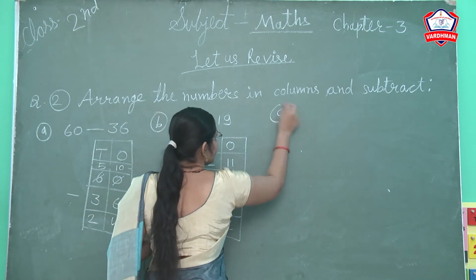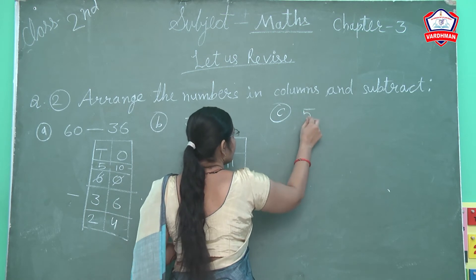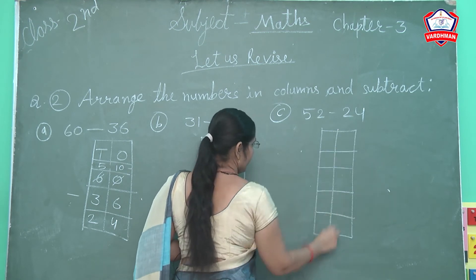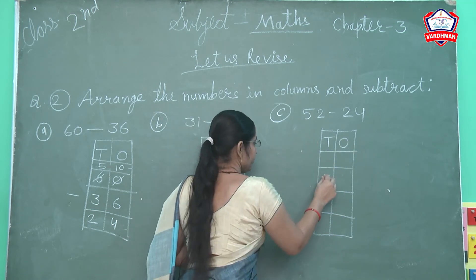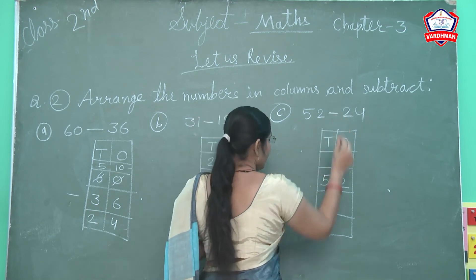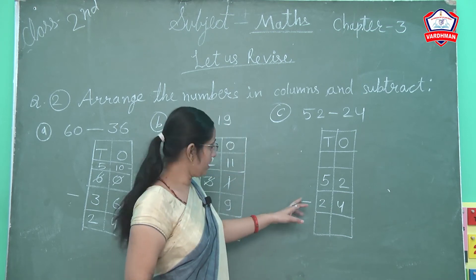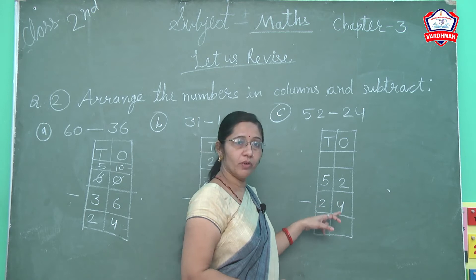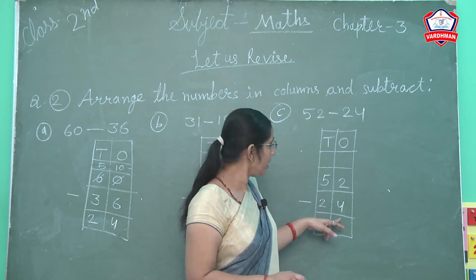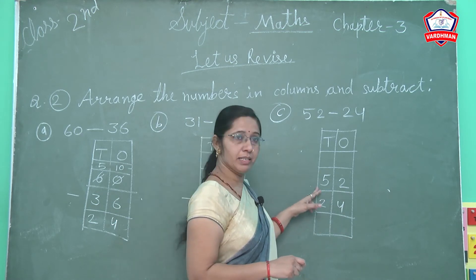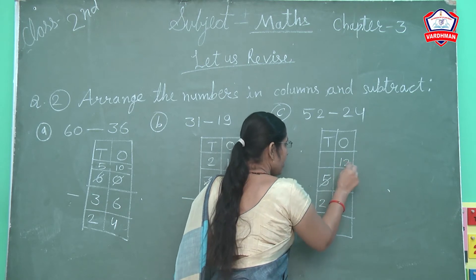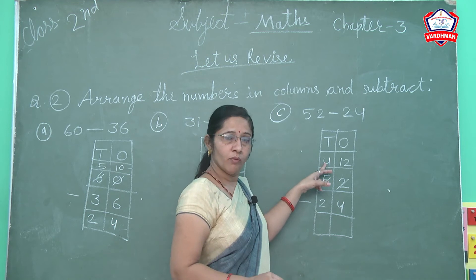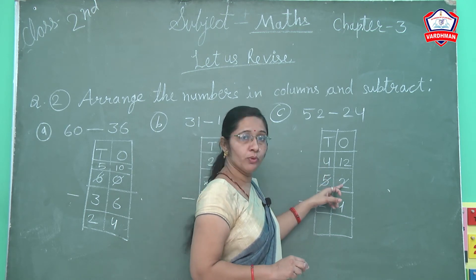Next question number c: 52 minus 24. Arrange in column — tens and ones. First digit is 52, next is minus 24. Write symbol here. Let's start — ones column. Ones mein first digit is 2. 2 mein se 4 less karenge. 2 mein se 4 less hota hai kya? Nahin, kyunki 2 small hai aur 4 biggest hai. Jo small number se biggest number cut nahi hoga. Pass wale se borrow lenge. 5 se idhar 1 borrow diya, 2 ke paas 1 lag gaya, toh kya ban gaya? 12. Toh 2 cut hoke 12 new digit aayi. 5 cut hoke 1 udhar chala na gaya, toh pichhe kitne bacha? 4. So new digit: 5 ki jagah pe 4, 2 ki jagah pe 12.